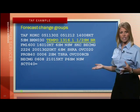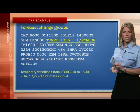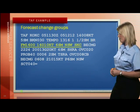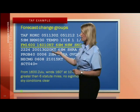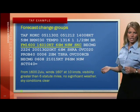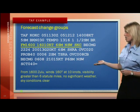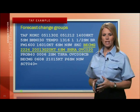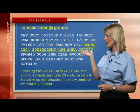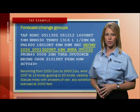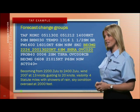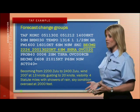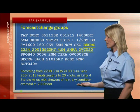The TEMPO sequence translates to temporary conditions at 1300 Zulu to 1600 Zulu — one and a half statute miles in mist. FM 1600 means from 1600 Zulu, winds will be 160 degrees at 10 knots, visibility greater than 6 statute miles. No significant weather, indicated by NSW, and sky conditions are going to be clear. BECMG means becoming — so becoming from 2200 Zulu to 2400 Zulu, wind is 200 at 13 gusting to 20 knots, visibility 4 statute miles. SHRA indicates rain showers, sky conditions overcast at 2000 feet.